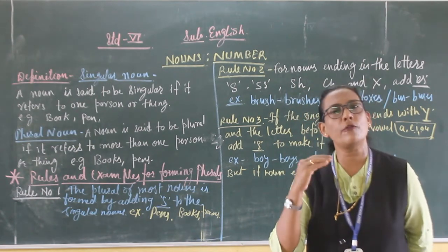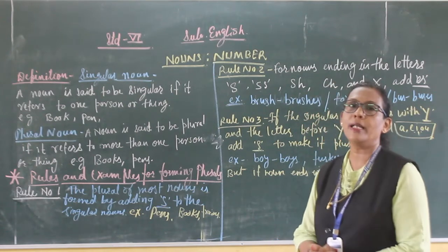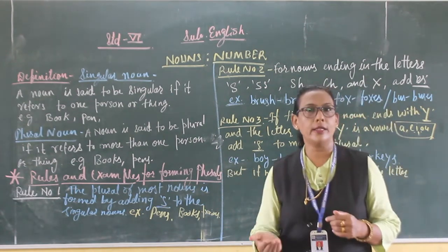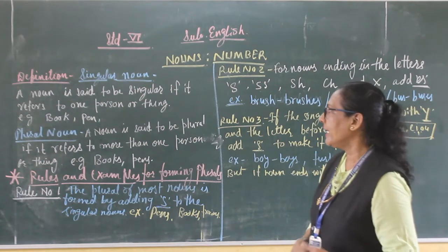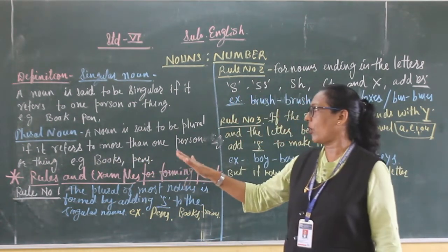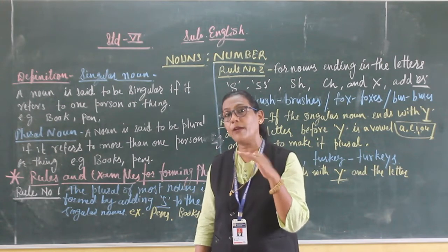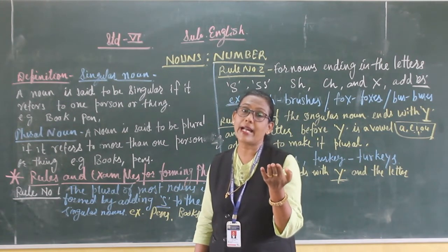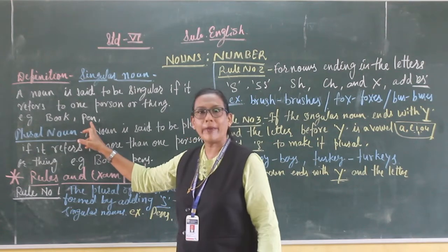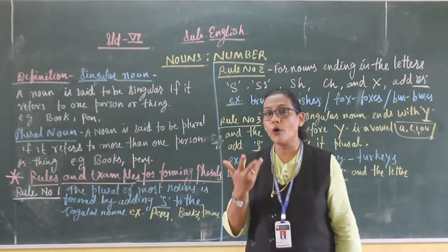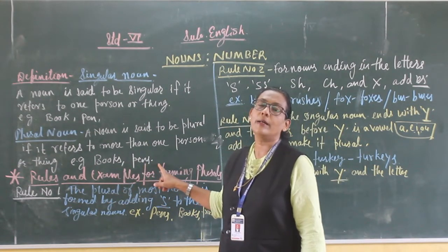The exact opposite of singular noun is plural noun. What is the definition of plural noun? A noun is said to be plural if it refers to more than one person or thing. If more than one book is there, that is how we say 'books' — we add S. That is called a plural noun.